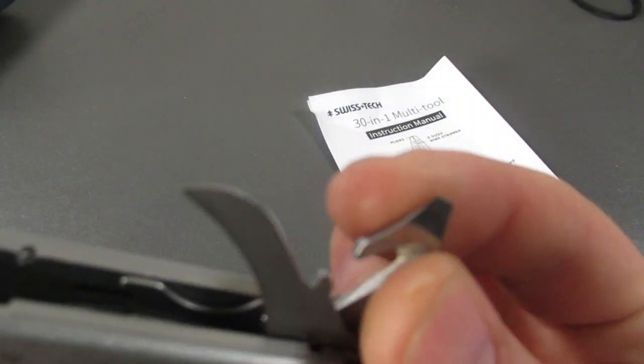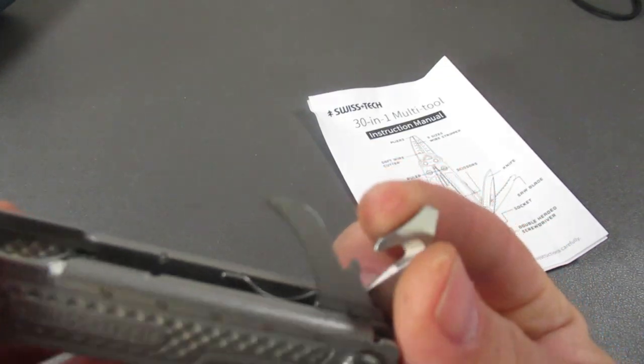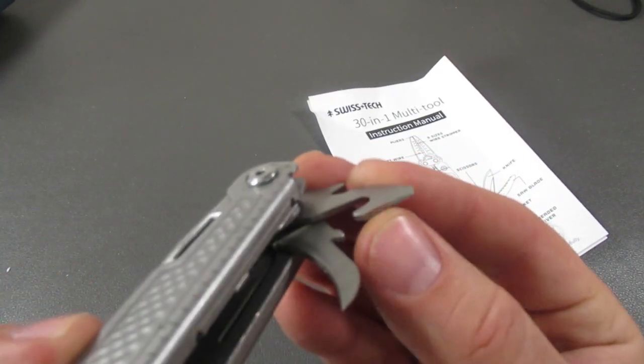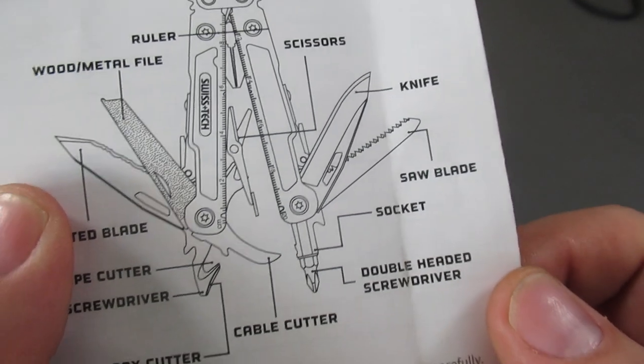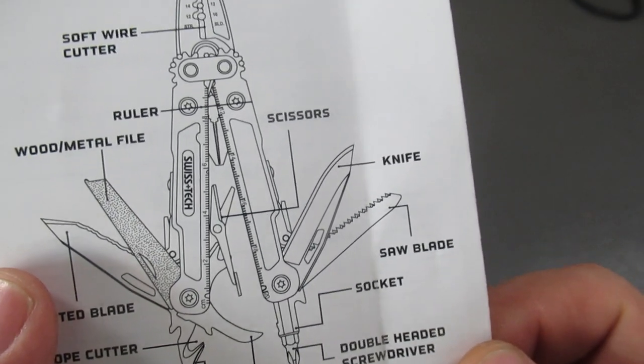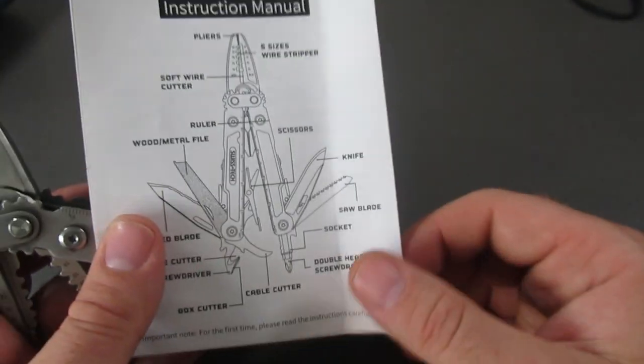So on this right here, they have, I guess, sharpened the edge of that to make that a cutter. And then you have the double head screwdriver, socket, saw blade, knife, and scissors.